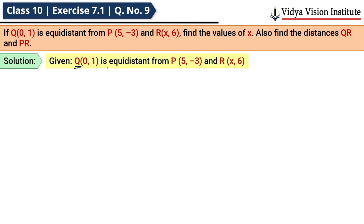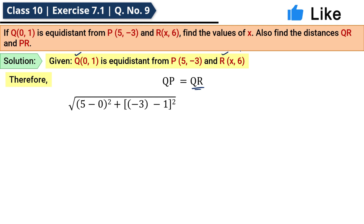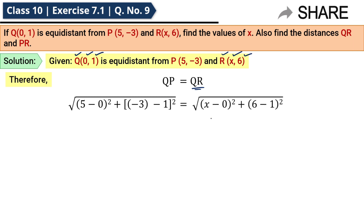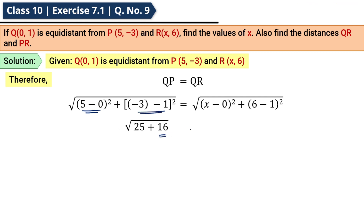Given that Q is equidistant from P and R, therefore QP = QR. QP = √[(x₂−x₁)² + (y₂−y₁)²]. Similarly, QR = √[(x₂−x₁)² + (y₂−y₁)²]. Substituting values: yahan par 5² = 25 aur (−4)² = 16, aur yahan x² + 25 aa jaata hai.